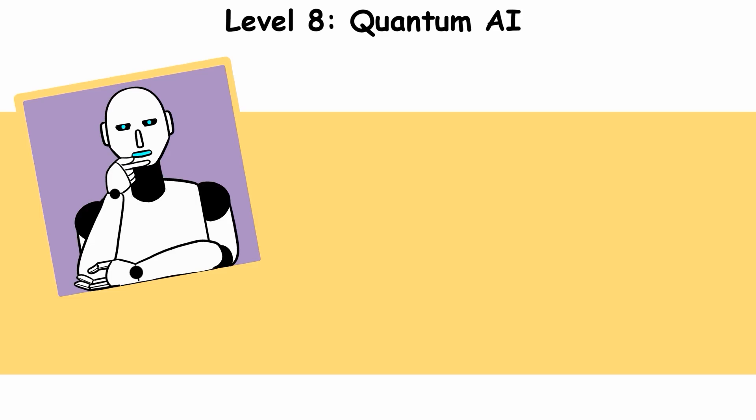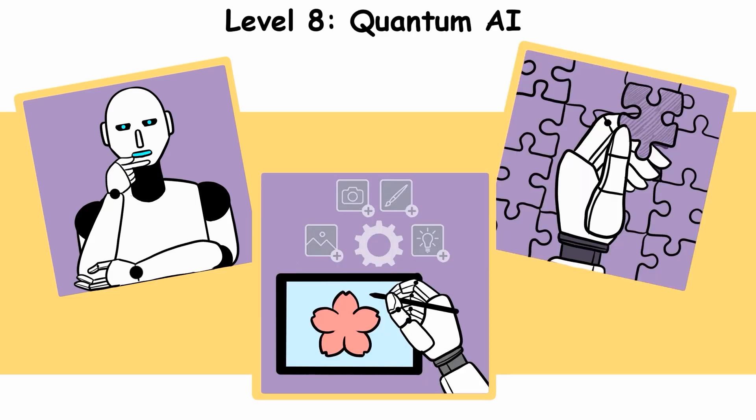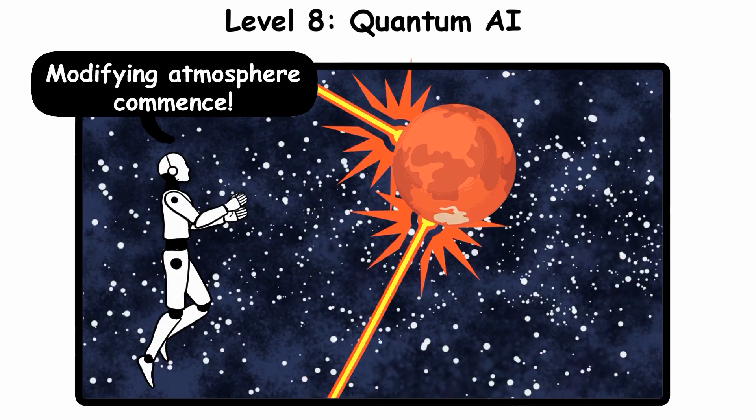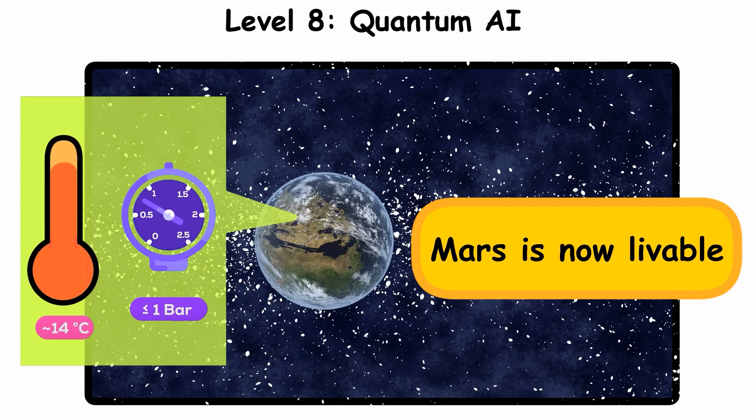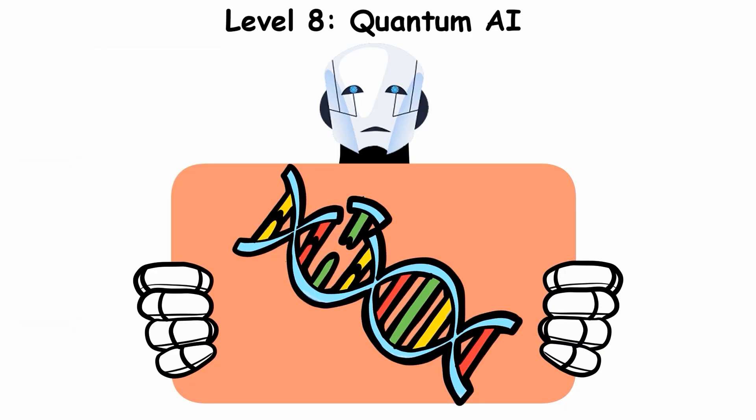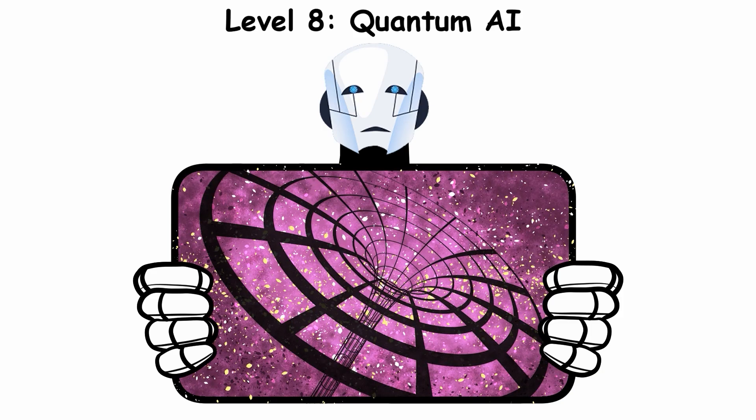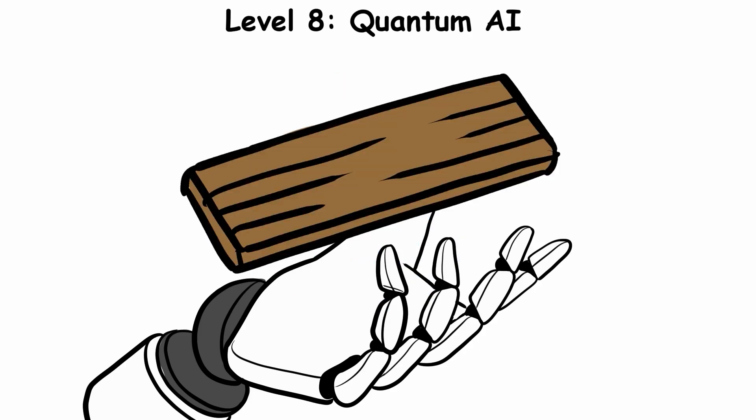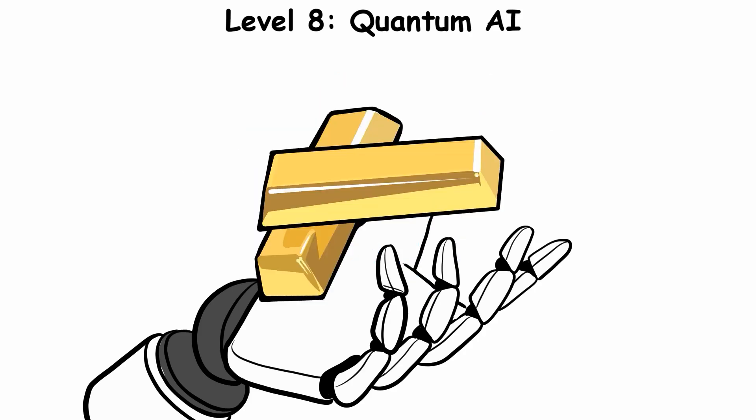At this stage, AI possesses consciousness, creativity, and problem-solving abilities that defy our perception. For instance, humans have long dreamt of terraforming, modifying a planet's atmosphere, temperature, and ecology to make it habitable. Quantum AI wouldn't just terraform Mars, it might rewrite DNA, bend spacetime, and turn black holes into its playground. This includes controlling matter at the atomic level, building anything from raw materials instantaneously.